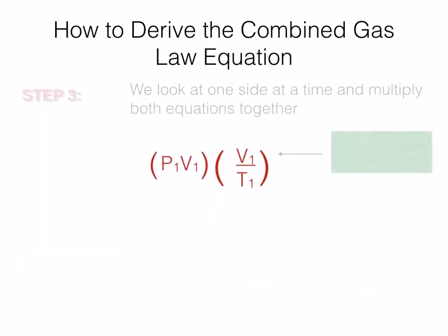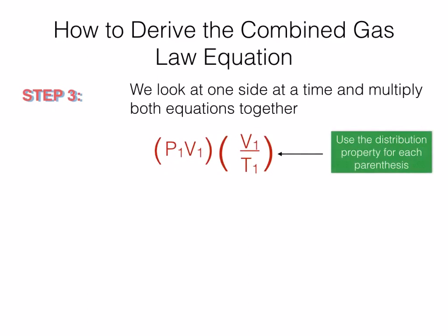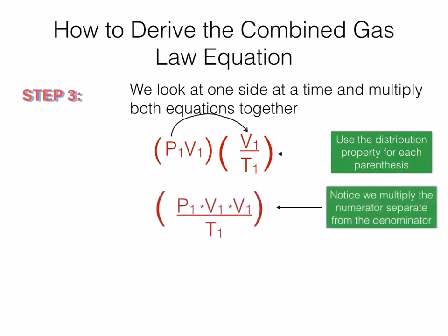So we're going to focus on the left-hand side. If we multiply these two together, we're going to use distributive property to find out what the products are going to be. When we do this, we're going to get in the numerator P1 times V1 times V1 divided by T1. Notice that we multiply the numerator separately from the denominator — we divide across the numerator and then across the denominator.